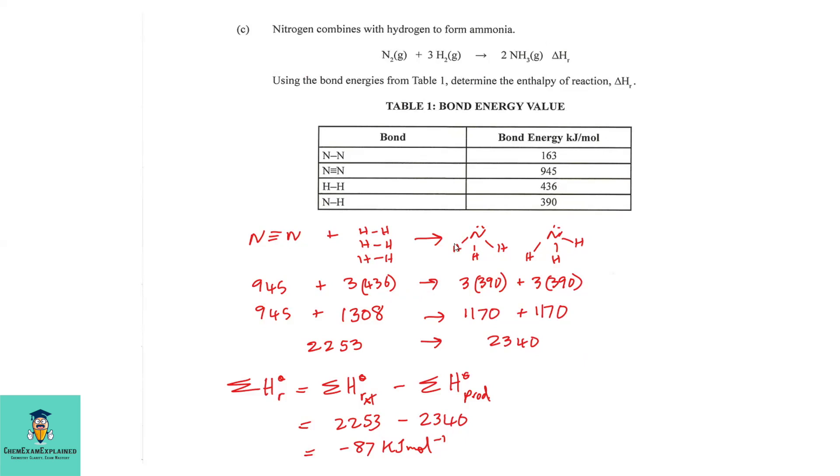We have 1, 2, 3, 4, 5, 6 NH bonds. So, what I did first was to multiply 3 NH bonds by 3 and another 3 NH bonds by 3. But you could simply say 6 times 390. So, we're going to sum the reactants which we get 2,253 and we sum the products which we got 2,340.